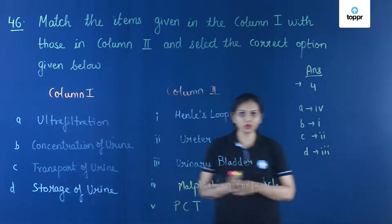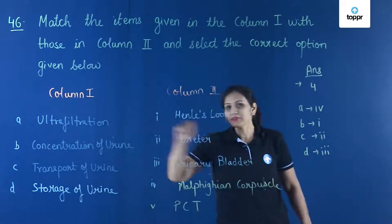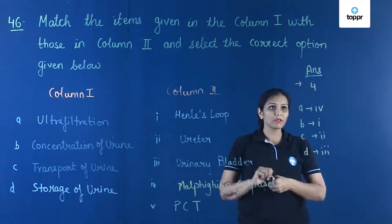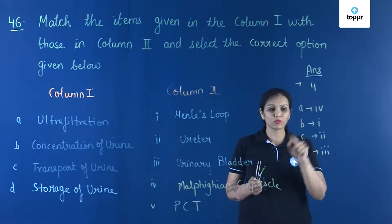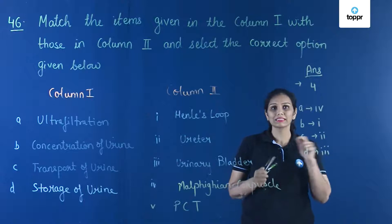As we all know that ultrafiltration is related to the Malpighian corpus. So for the first, A is fourth, B is 1, C is 2, D is 3.